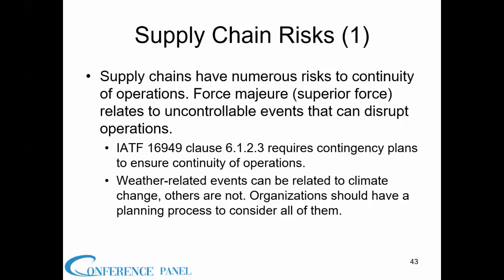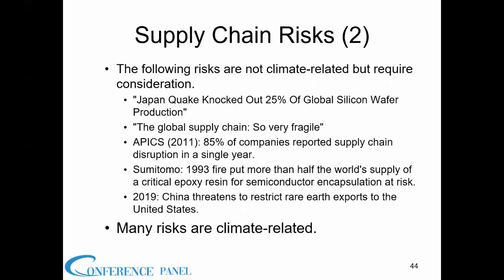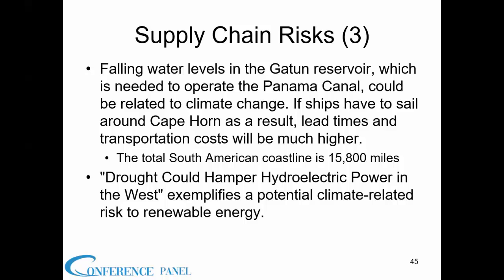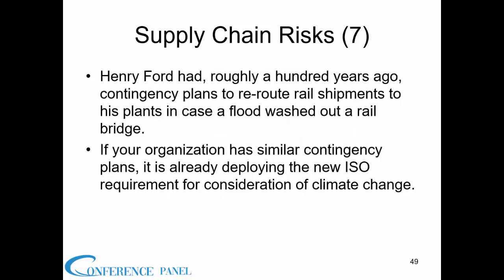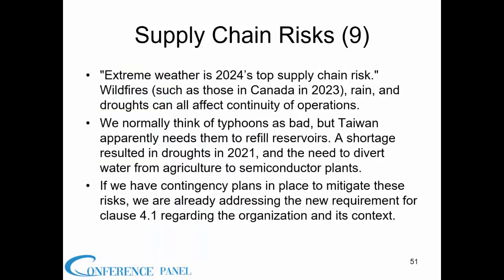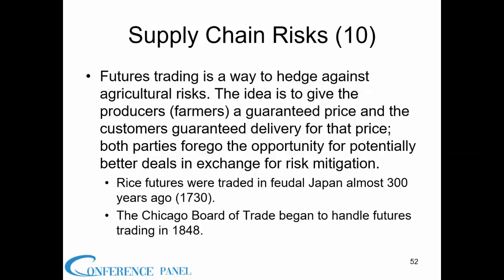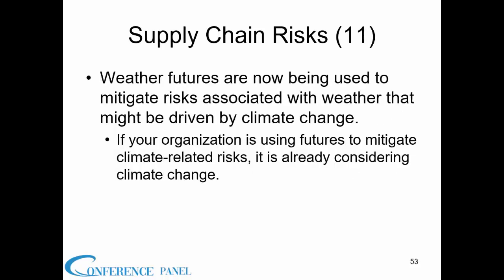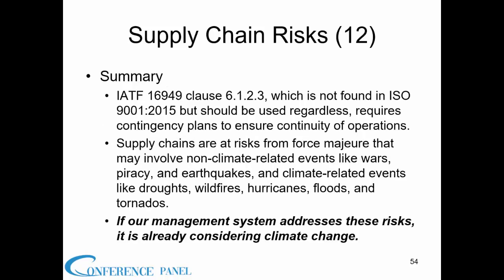Supply chains have numerous risks to continuity of operations. The following risks are not climate-related but require consideration. What does climate change have to do with the Panama Canal? Henry Ford, roughly 100 years ago, had contingency plans to reroute rail shipments in case a flood washed out a rail bridge. Tornadoes — they actually had a batch of tornadoes. Extreme weather is the top supply chain risk for 2020. Another way to mitigate risks is futures trading — they now have weather futures to mitigate risks associated with weather. IATF 16949 requires contingency plans to ensure continuity of operations.